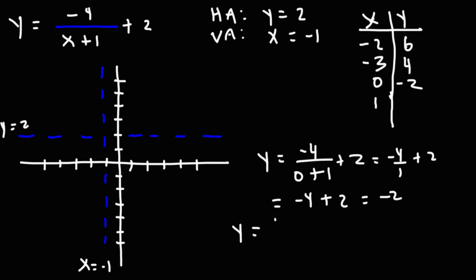And if we were to plug in positive 1, 1 plus 1 is 2, negative 4 divided by 2 is negative 2. Plus 2, that will give us 0.